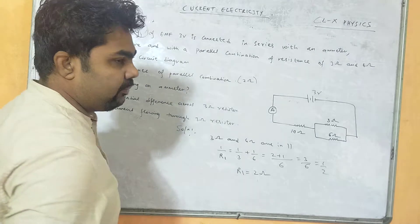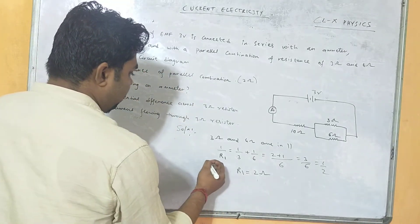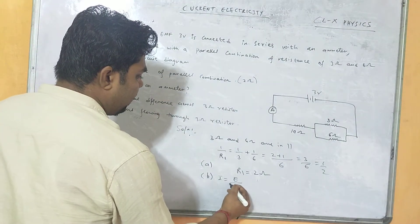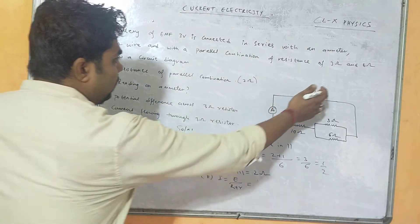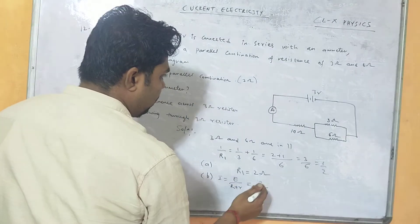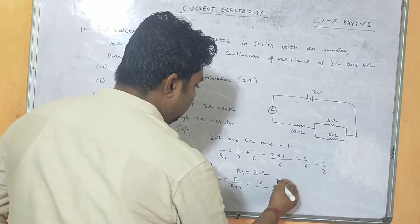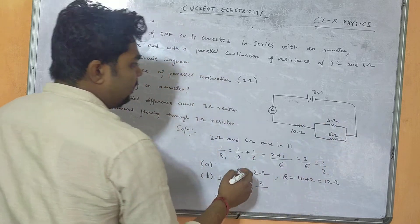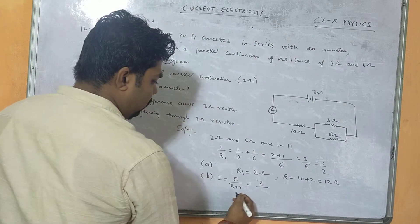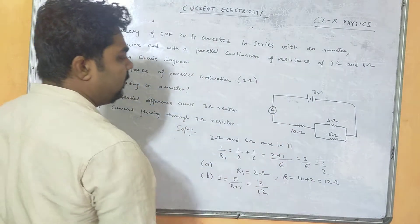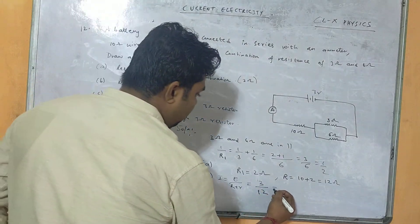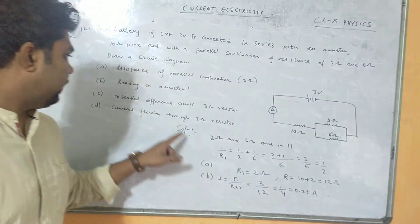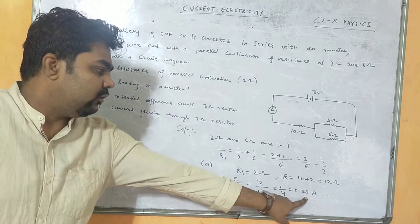Next we find the reading on the ammeter. The ammeter reading means current: I = E / (R + r). Total EMF is 3V. Total resistance: 10 ohm in series with the parallel combination of 2 ohm gives 10 + 2 = 12 ohm. Internal resistance is not given, so r = 0. Therefore I = 3/12 = 1/4 = 0.25 ampere. So the ammeter reading is 0.25 ampere.